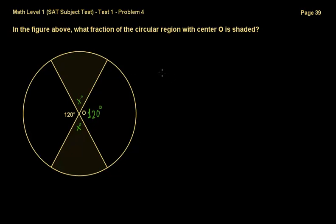So if you were to add all of those up, you should get 360. So x plus x plus 120 plus 120 is equal to 360. That gives us that 2x is equal to 120. So x is equal to 60 degrees. Let me just write that down with a different color.